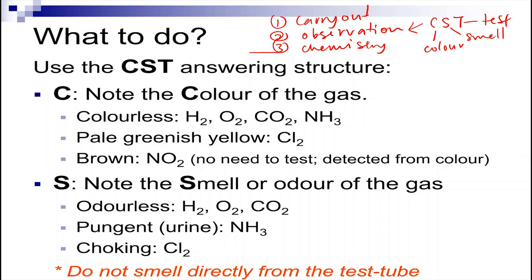You also need to note the smell or the odour of the gas. There are four odours altogether. One is not written, so please write it down — it's a rotten egg smell, and this is for sulfur dioxide. Hydrogen, oxygen, and carbon dioxide are odourless, whereas ammonia gas is pungent, and chlorine gas will make you choke, so it's called a choking smell. Please do not smell directly from the test tube, because some of the gases are poisonous.